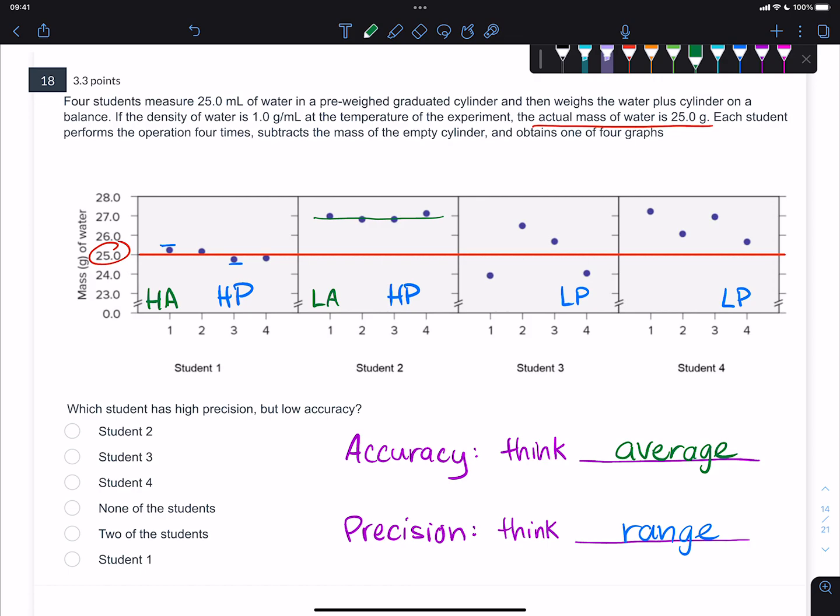It's a little bit harder to see for these, but it's possible. If you look at the approximate average for student 3, although they have pretty low precision because their range—their values are all over the place—they happen to have high accuracy because the average of their values is near the actual value. Unfortunately for student 4, not only is their range relatively large, but the average of their values is far away as well, so they have low accuracy. If you look at these questions, it says which student has high precision but low accuracy, that would be student number two.